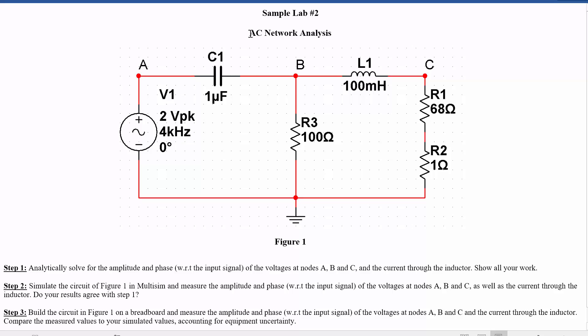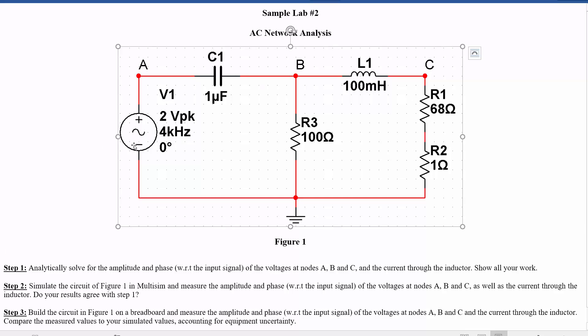Hi, this is going to be AC Network Analysis. We're going to learn how to solve for steady state voltages and currents at different points in a circuit that has passives — resistors, but also inductors and capacitors — and sinusoidal supplies.